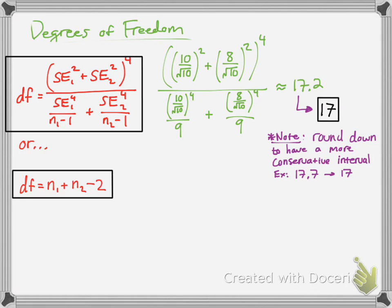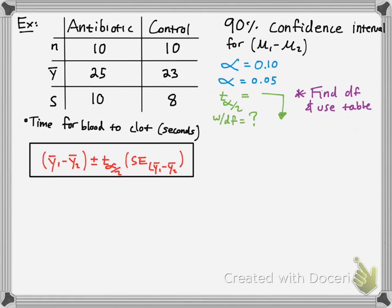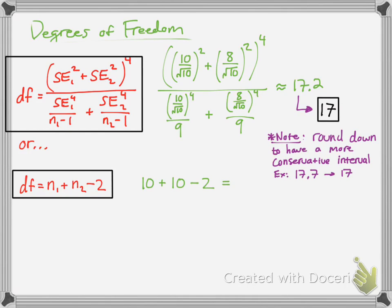So now the shortcut method, using that formula, simply we had a sample size of 10 for both, so 10 plus 10 minus 2 is 18. So they're pretty close, but I did say round down when we had a decimal, but the shortcut method does produce a higher degree of freedom, but we'll see how that affects the data in terms of our analysis in a moment.